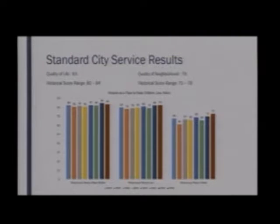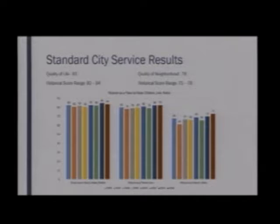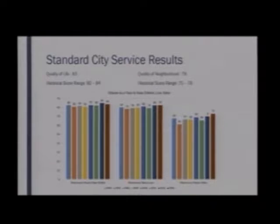We'll get to the first part, which is the standard city questions. This first one asks about quality of life, overall quality of the neighborhood, as well as Moscow as a place to raise children, live, and retire. You'll see 83% for quality of life for 2016 and 78% for quality of neighborhood. The graph below shows the rates for each of the place to live, retire, and raise children categories from all surveys back to 2002. The information has stayed relatively consistent between years with no large increase or decrease.